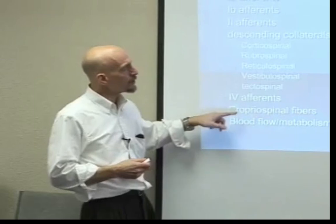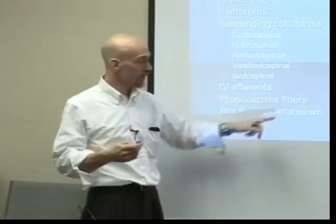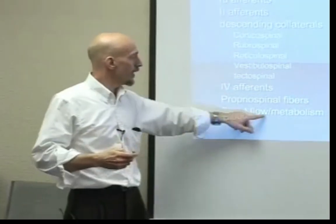Propriospinal fibers are fibers that go from one segment to the next segment. That's why when we stimulate the C5 dermatome or myotome or sclerotome, we're not only going to get activity at the cord level at C5, but also at C4 and C6 — we have physiological overflow that occurs because of these propriospinals, sometimes called the tracts of Schütz.